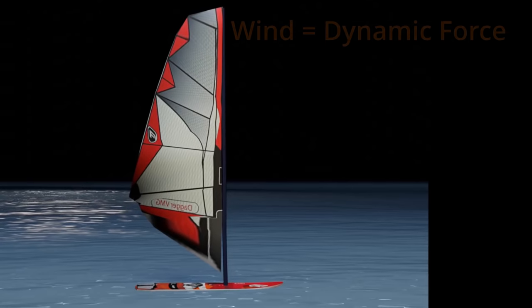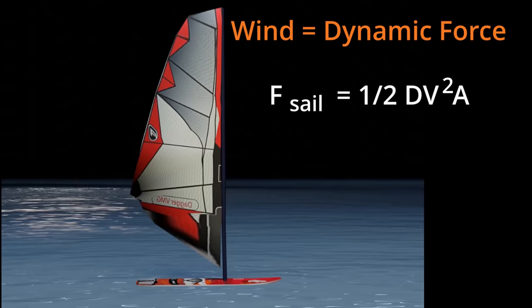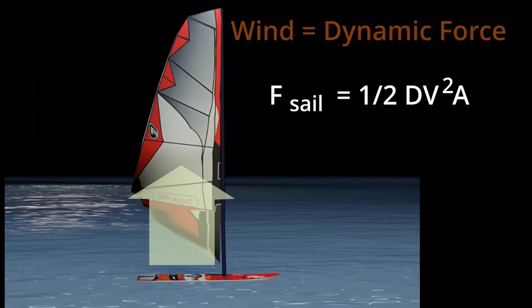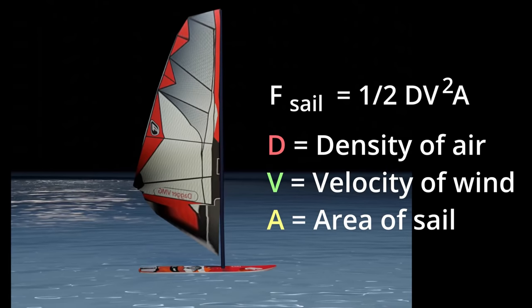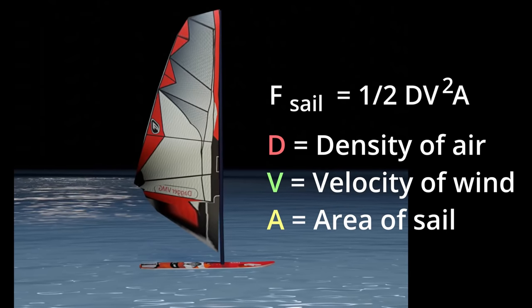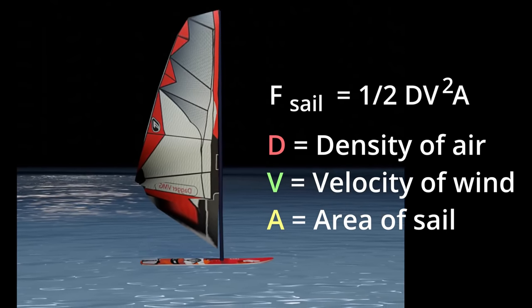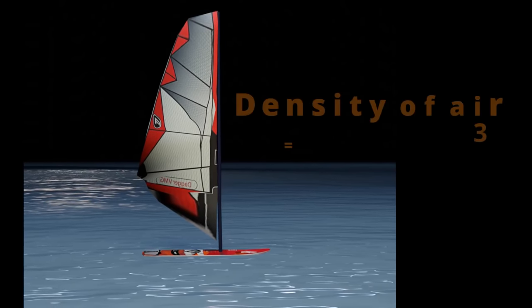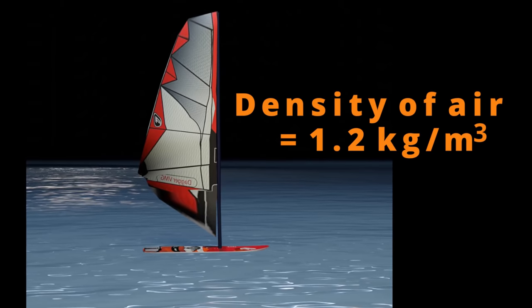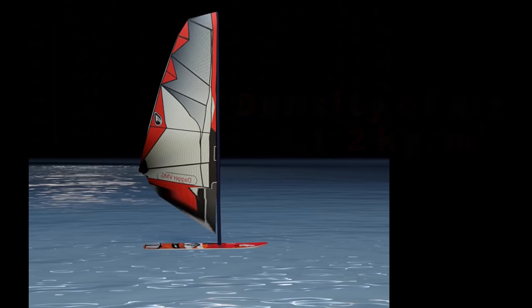So why doesn't the board just go downwind? The force of the wind is a dynamic force, and the dynamic force has the formula: force on the sail equals one-half times the density of the air times the velocity of the wind squared times the area of the sail. The key parameter here is the density of the air, which is very low at 1.2 kilograms per cubic meter.